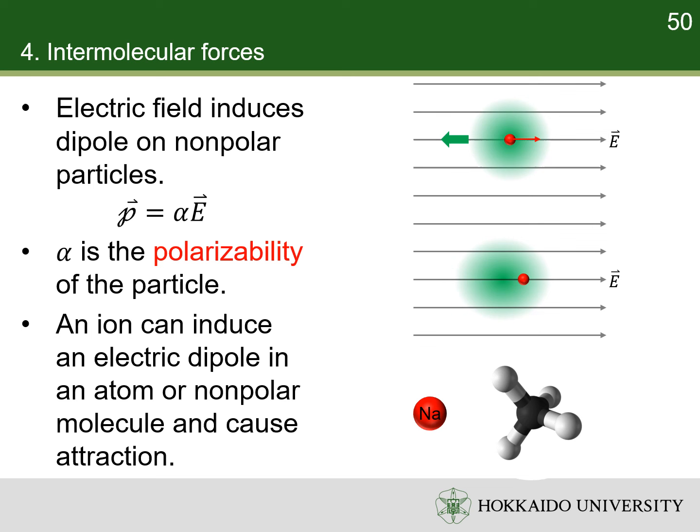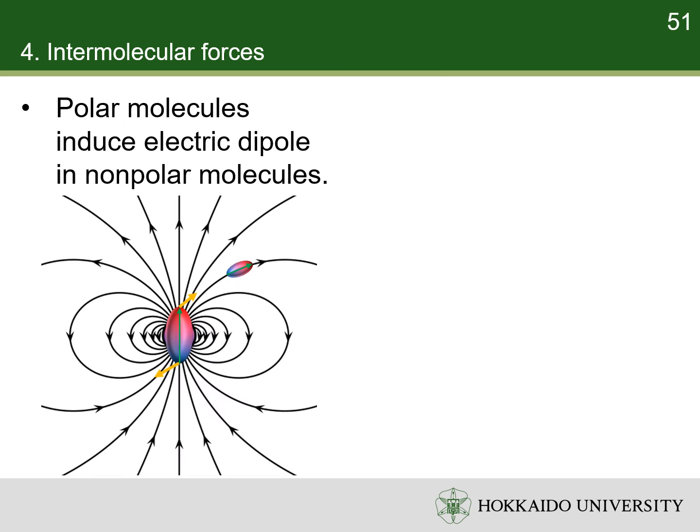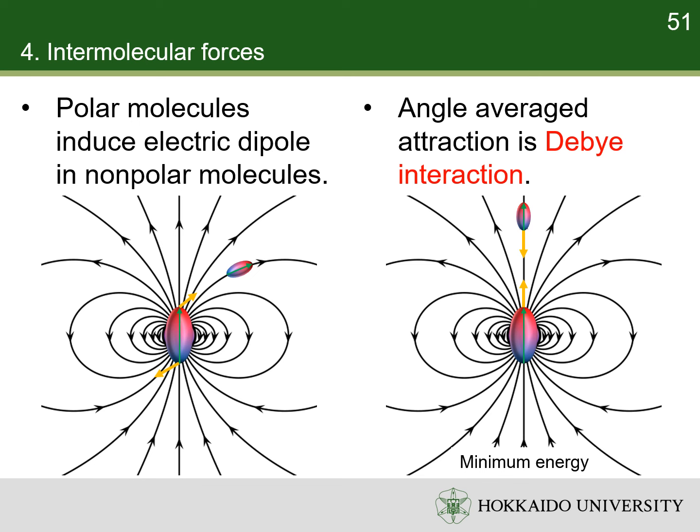One example is the interaction between a sodium ion and methane. In this system, methane's electrons are attracted by the sodium ion and biased to the sodium ion side. As a result, the methane acquires an induced electric dipole moment and is attracted by the sodium ion. Similarly, a polar molecule can induce an electric dipole in an atom or nonpolar molecule. The angle-averaged interaction between a permanent electric dipole and an induced electric dipole is called Debye interaction. Debye interaction tends to align the molecules to reduce potential energy and cause mutual attraction.